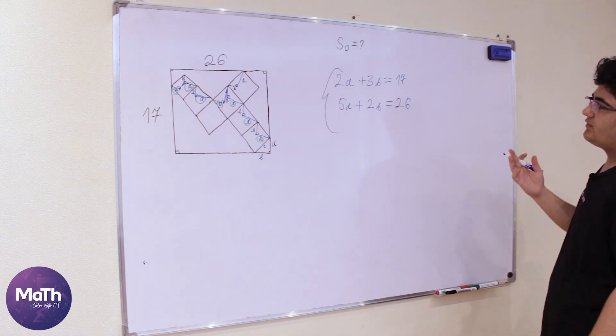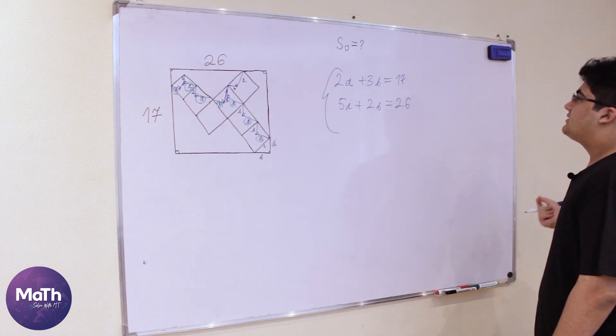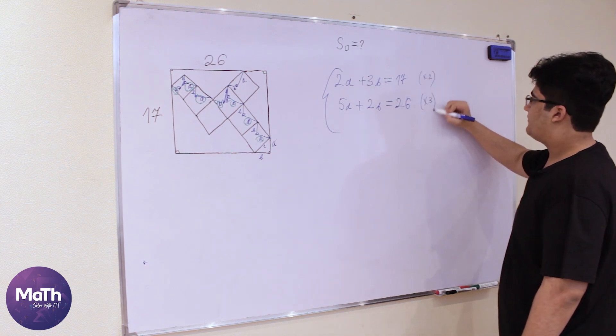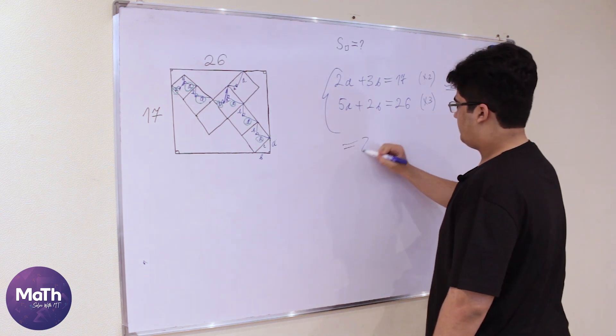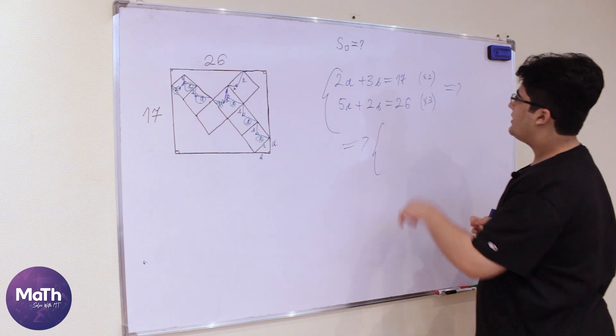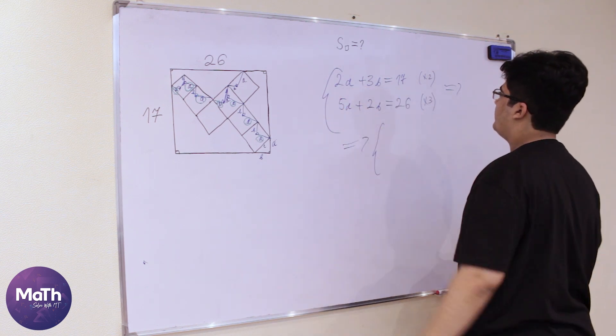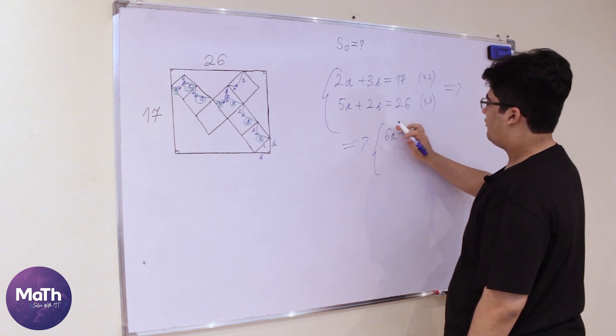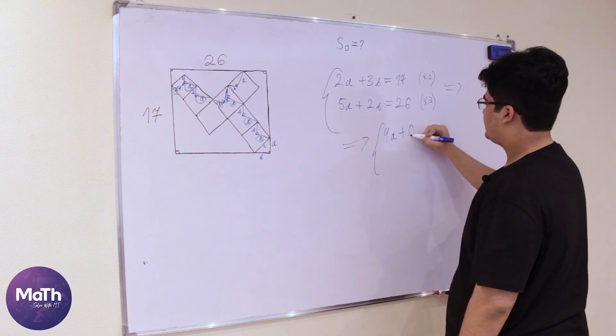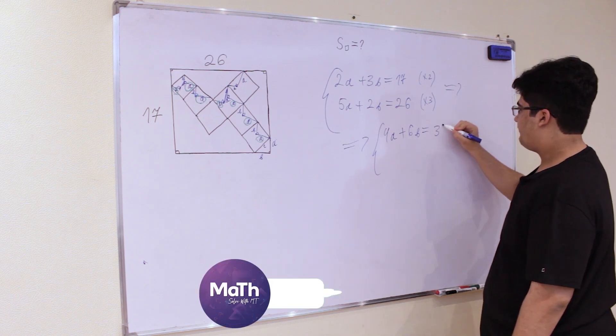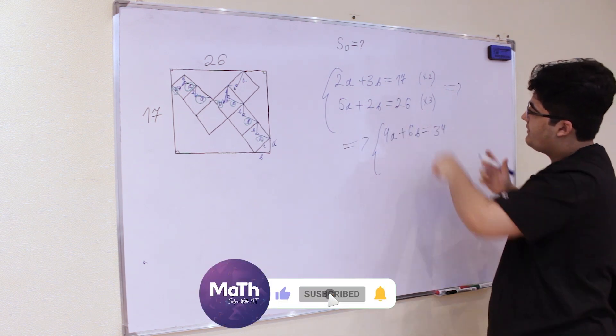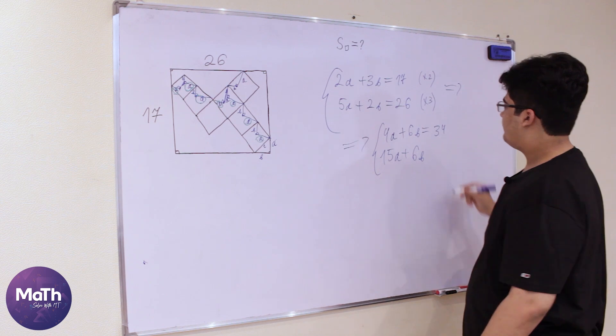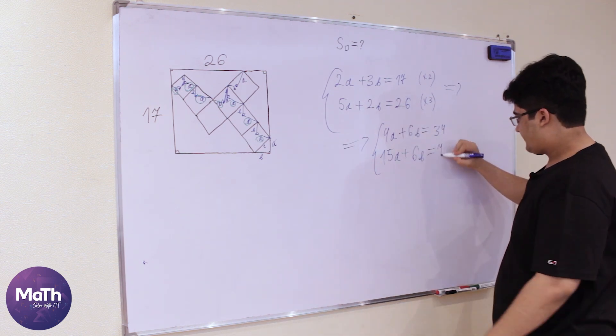So we have the system of equations. We can solve it like, let's multiply this one by two and this one by three. Okay, so we multiply this by two and we have, I mean 4a plus 6b is equal to 34. Then we multiply this by three so we have 15a plus 6b that is equal to 78.